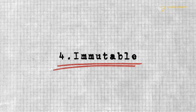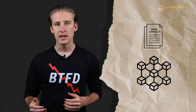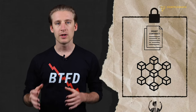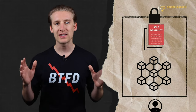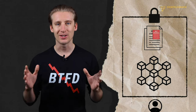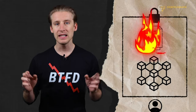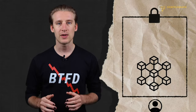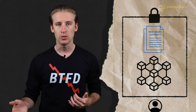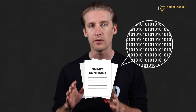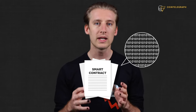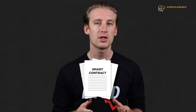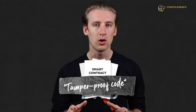Immutable. Once smart contracts are deployed, they can't be changed. However, if the creator of the contract includes a function called self-destruct in the code, they're able to delete the smart contract in the future and replace it with a new one. However, if the function isn't included in the code beforehand, they won't be able to delete it. Therefore, we can say that smart contracts provide tamper-proof code.